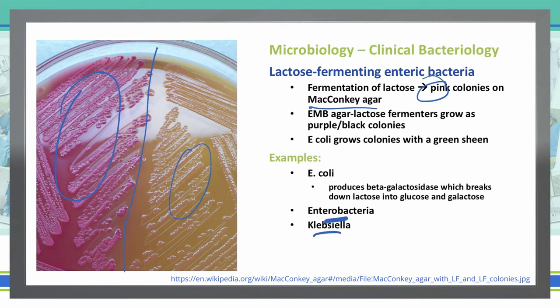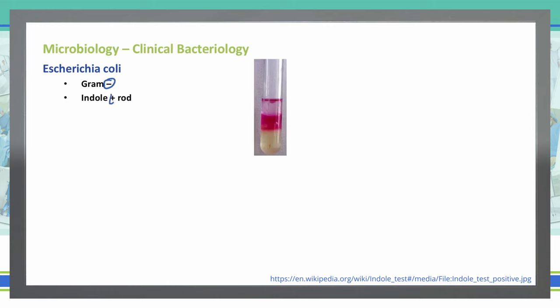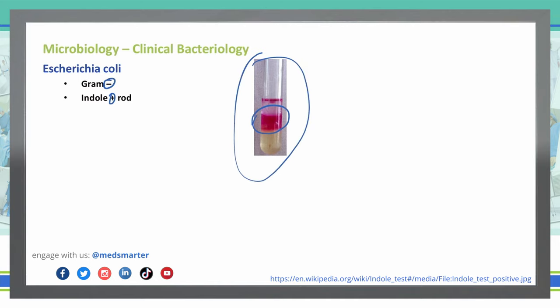Let's look at some of those particular lactose-fermenting bacteria a little bit closer. Let's start with E. coli, which is a gram-negative indole-positive rod. The indole test, which you can see here in this particular test tube, is a biochemical test that we use to determine if an organism can convert tryptophan into indole. If it does convert it, it will turn pink like we see in that particular test tube. So when we see that test come back positive, we have an indole-positive rod.